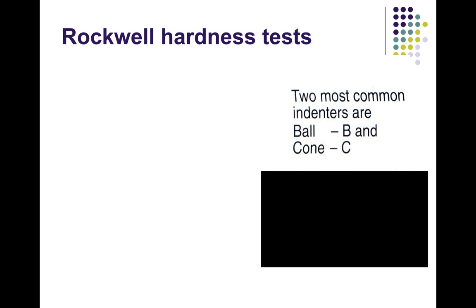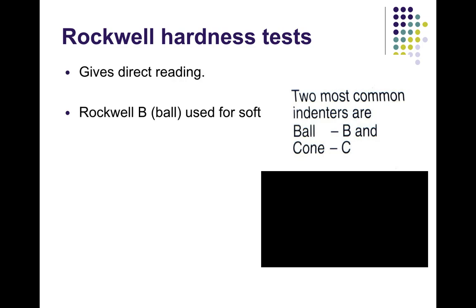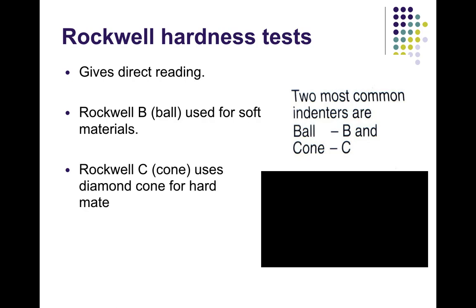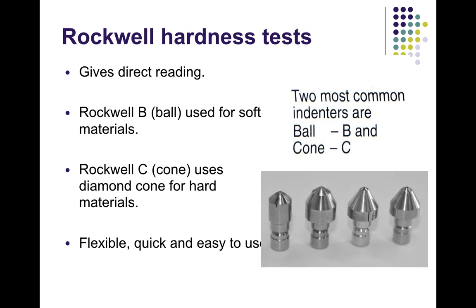In the Rockwell hardness test, the most common indenters are the ball and the cone. The cone gives a direct reading. Rockwell B with a ball is used for soft materials, and Rockwell C with a diamond cone is used for hard materials. This test is flexible and easy to use — it can be applied to both soft and hard materials, making it a very important test.